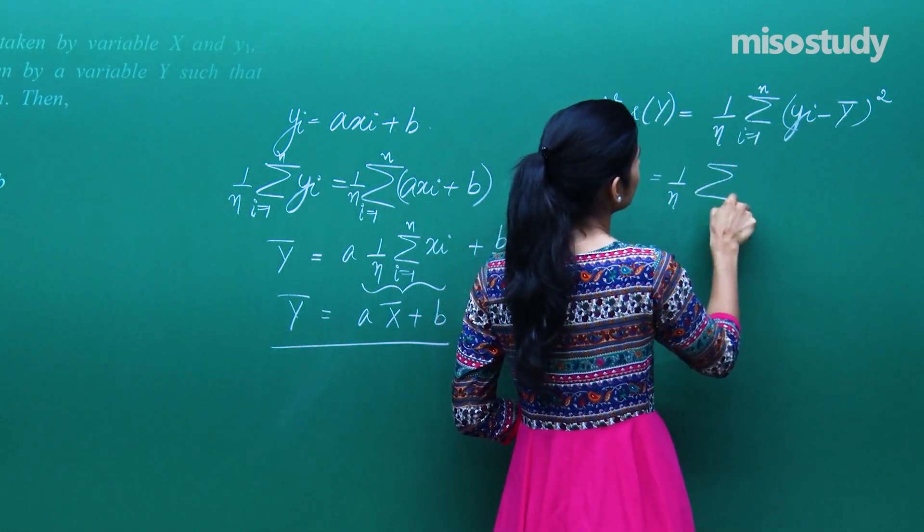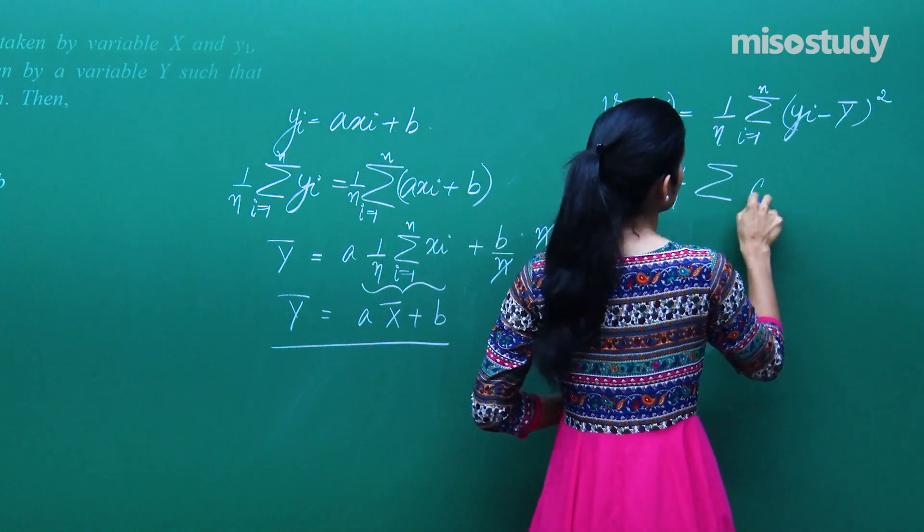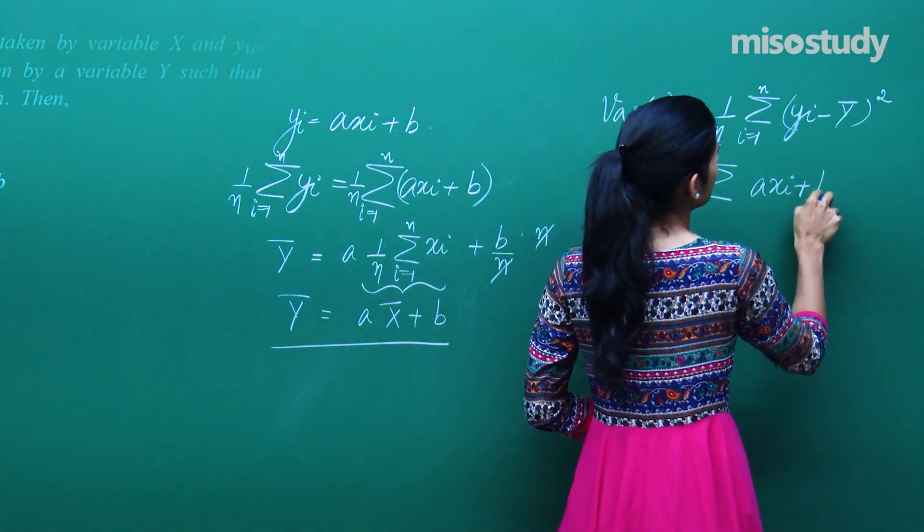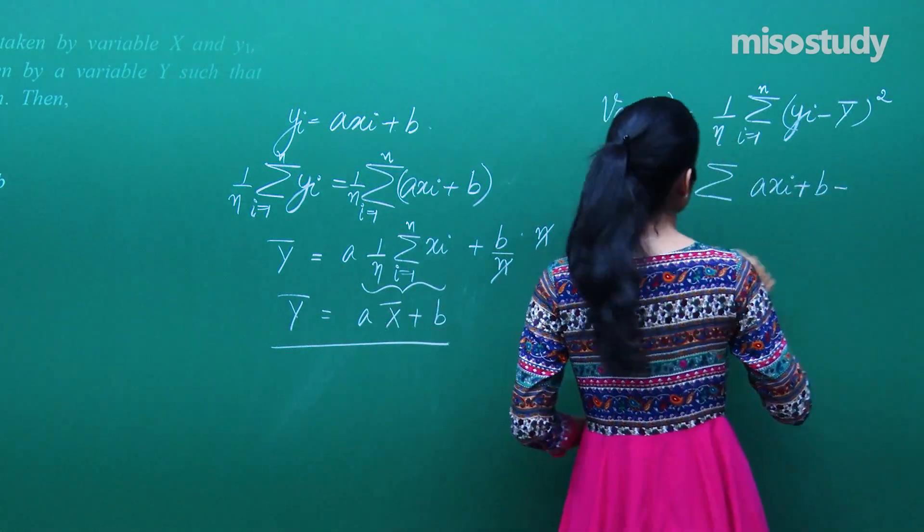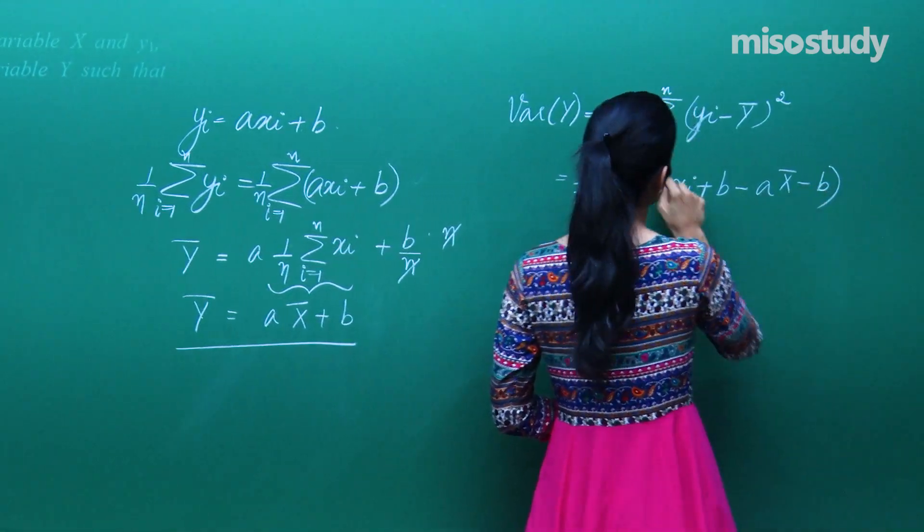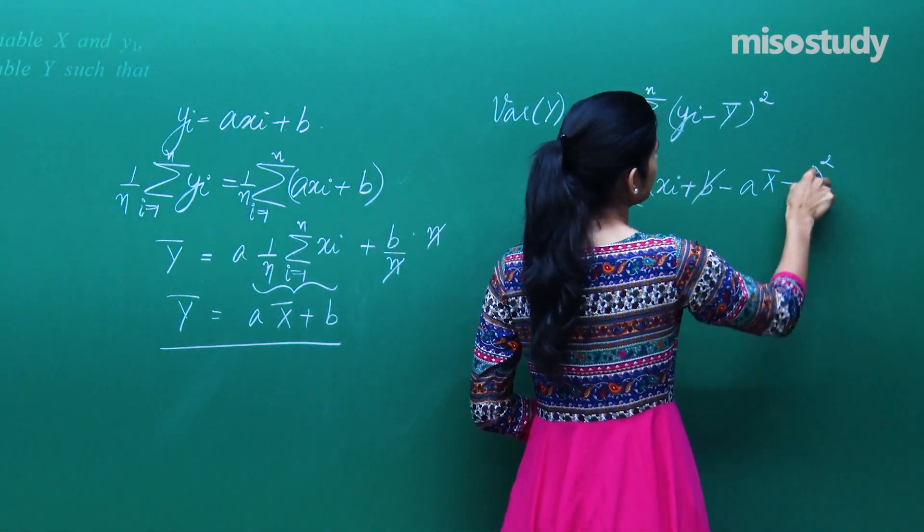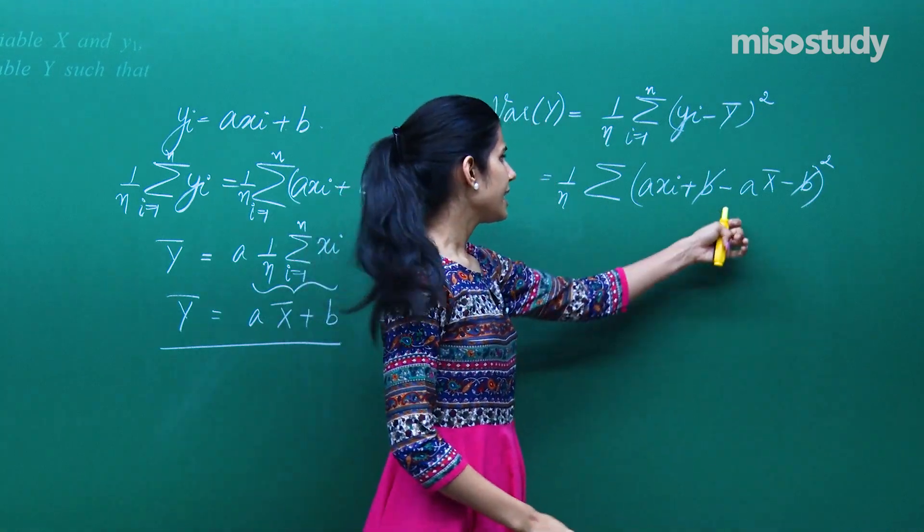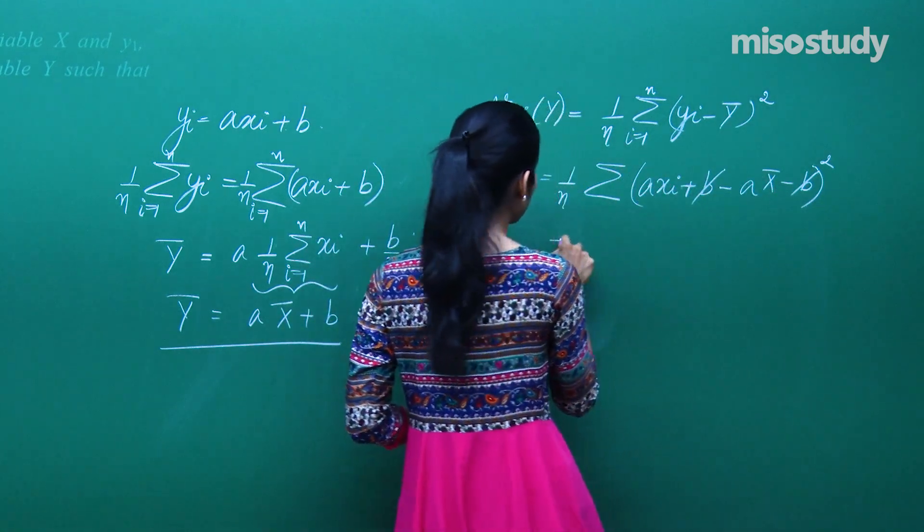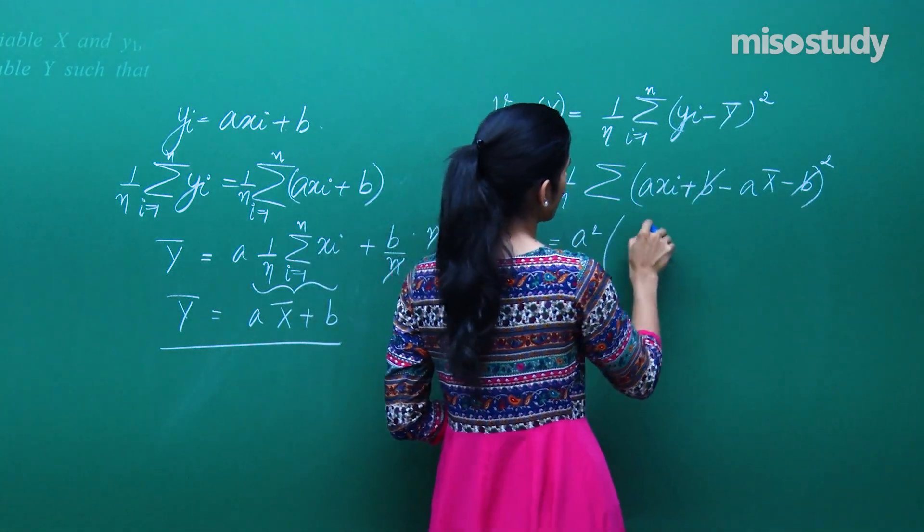So yeh hoga summation yi is what? axi plus b minus y bar is ax bar plus b ka whole square. Plus b minus b cancels out. A common hai, square ke saath bahar nikalega, a square. Andar kya bacha? 1 by n summation i varying from 1 to n.